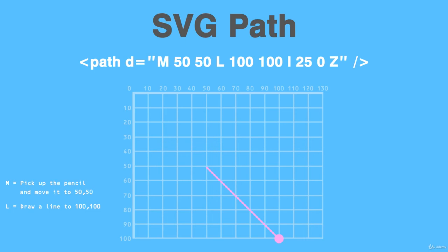Notice the difference between uppercase 'L' and lowercase 'l'. The lowercase version is relative — it means move from the current position. So lowercase 'l 25 0' means move 25 units to the right from the current position, because x is 25 and y is 0, meaning we're not moving in the y direction at all.